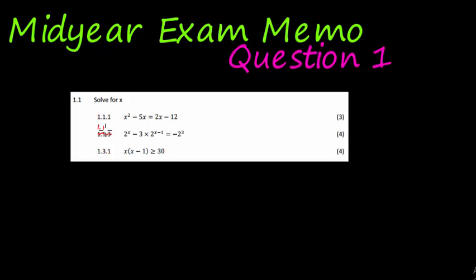Okay, so there we go 1.1.1. First question, solve for X. We notice immediately that it is a quadratic question which means we need to write it in a quadratic format. X squared minus 5X minus 2X plus 12 is equal to 0. X squared, I shouldn't write in red so I can show you the marking. Negative 7X plus 12 is equal to 0.